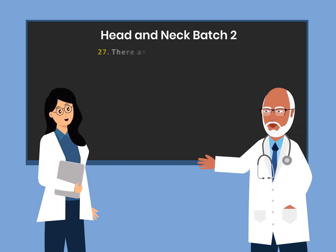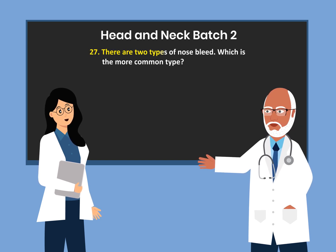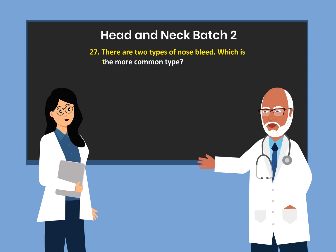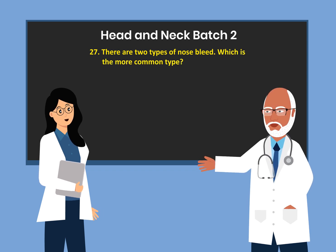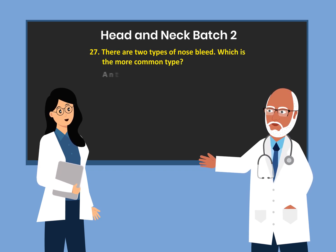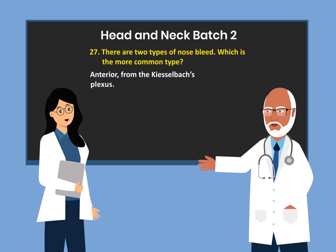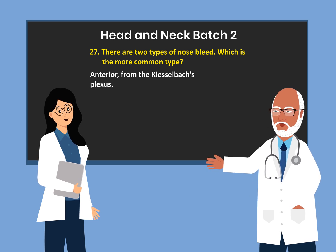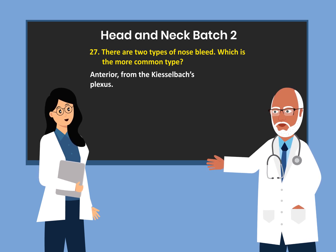There are two types of nosebleed. Which is the more common type? Anterior nosebleed, from the Kiesselbach plexus.